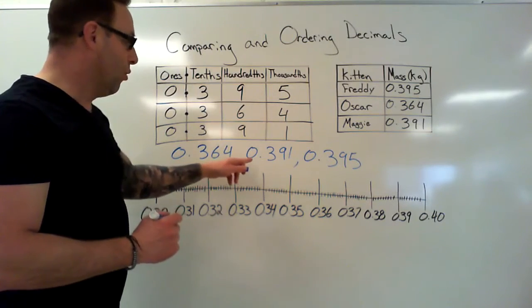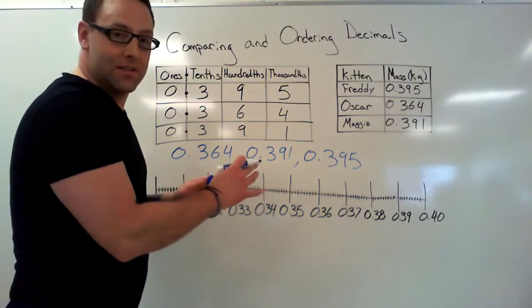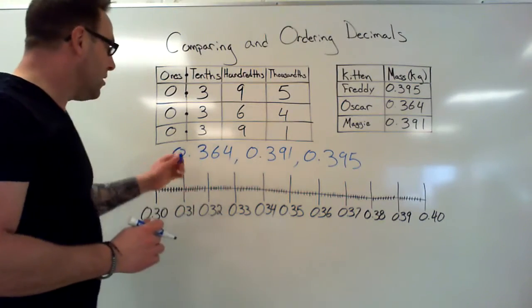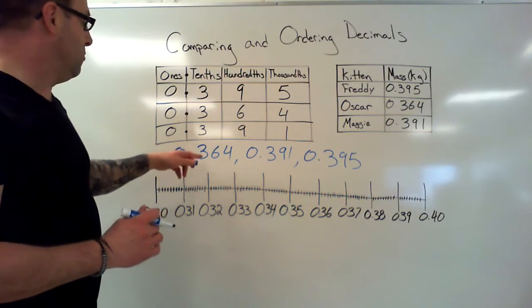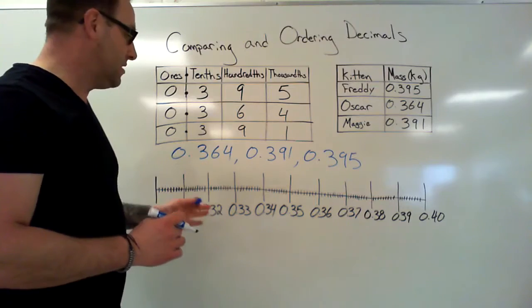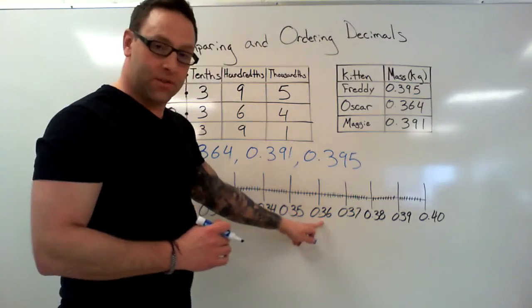Okay, so let's put these kittens on the number line, starting with the least. Oscar's weight of zero point three six four. Let's find zero point three six on our number line. That's right here.